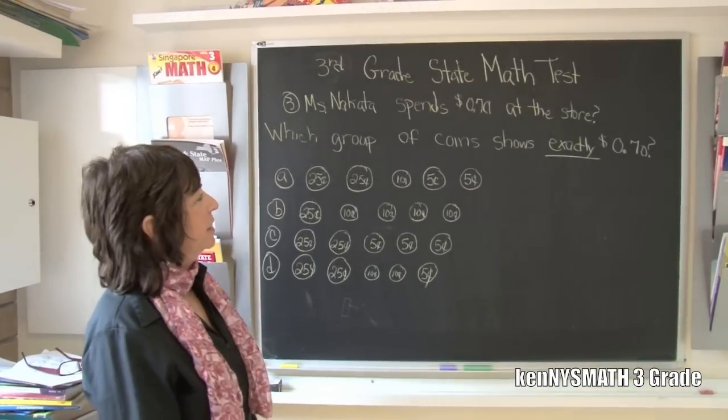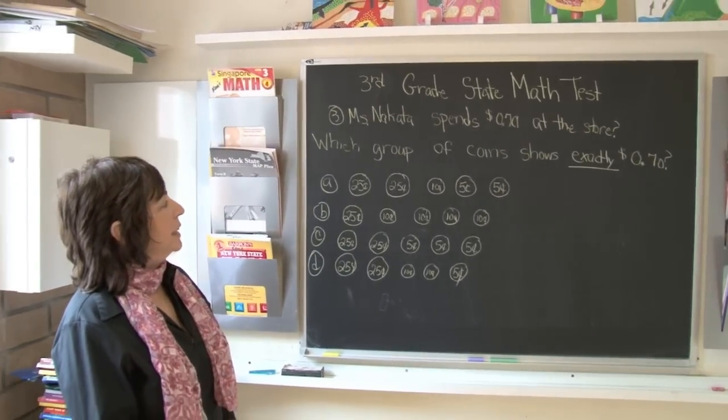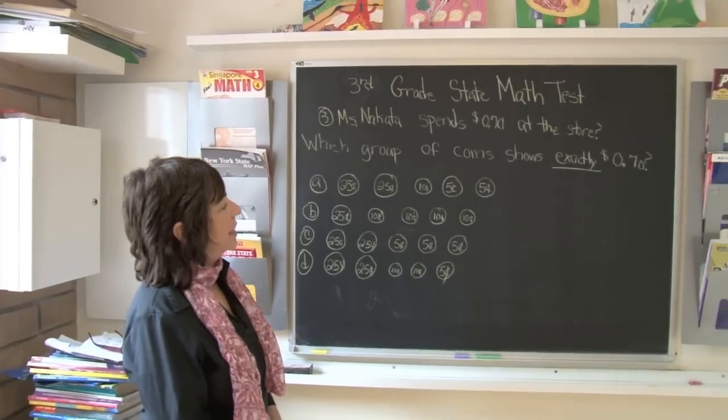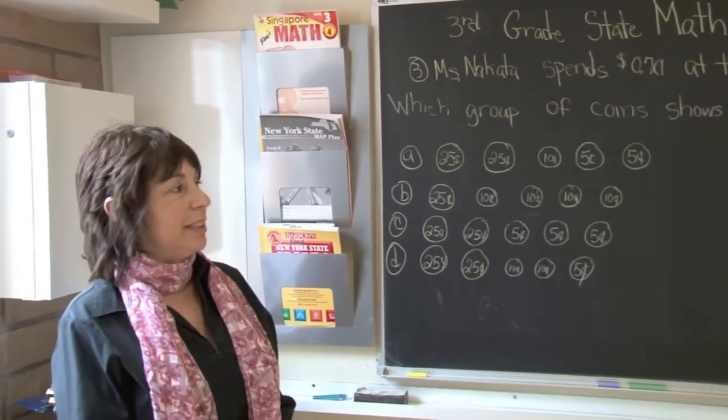Boys and girls, today's question deals with counting coins. The question says, Mrs. Nakata spent 70 cents at the store. Which group of coins shows exactly 70 cents?